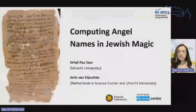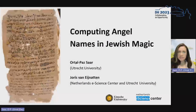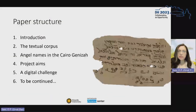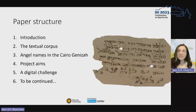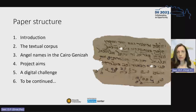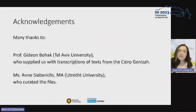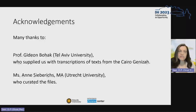Let me begin by sharing my screen so that you can also see the plan of our paper, titled Computing Angel Names in Jewish Magic. I have to begin by saying that this project started out many years ago as a fully manual project with no digital humanities involved, and only at a later period I realized the potential advantages of employing digital tools. The work we have done was greatly aided by Professor Gideon Bohak and later also Miss Anne Seabreeves, and we are both very grateful to them for their help.